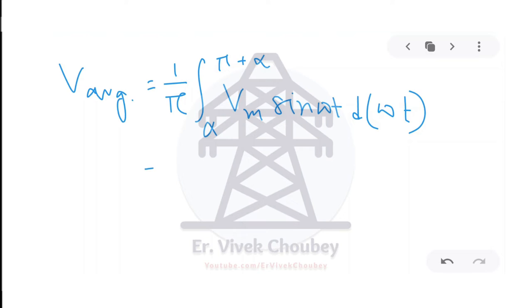Evaluating the integral gives: V_average = (1/π) · Vm · [−cos(ωt)] from alpha to π+alpha = (Vm/π) · (cos α − cos(π + α)).